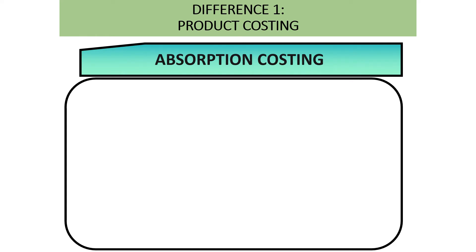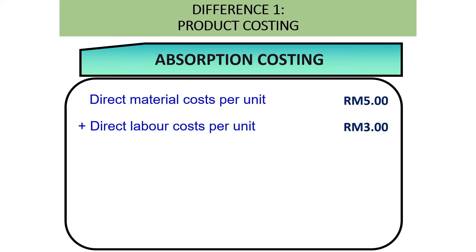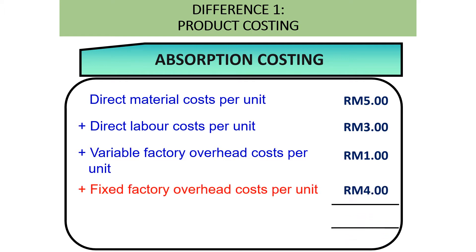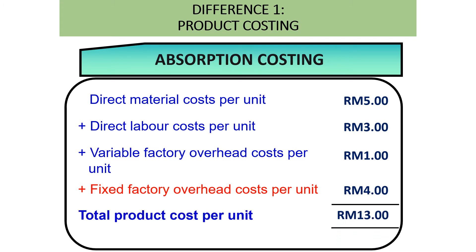To calculate product costing under absorption costing: direct material cost per unit RM5, direct labor cost per unit RM3, variable factory overhead cost per unit RM1, and fixed factory overhead cost per unit RM4, giving a total product cost per unit of RM13.